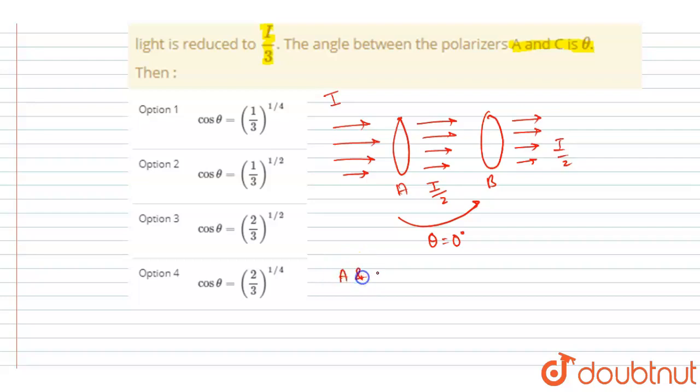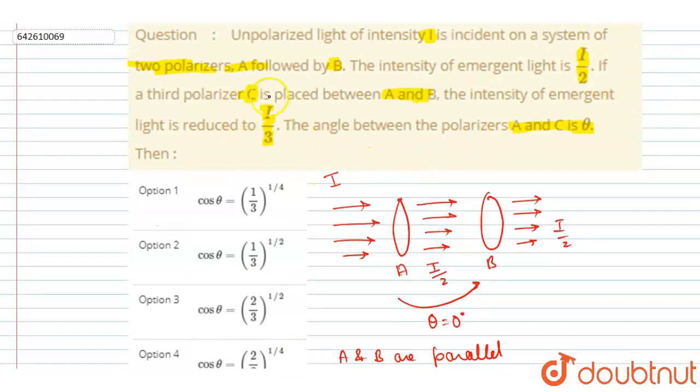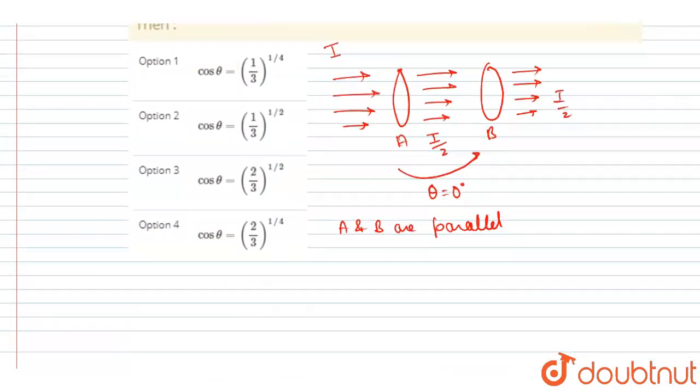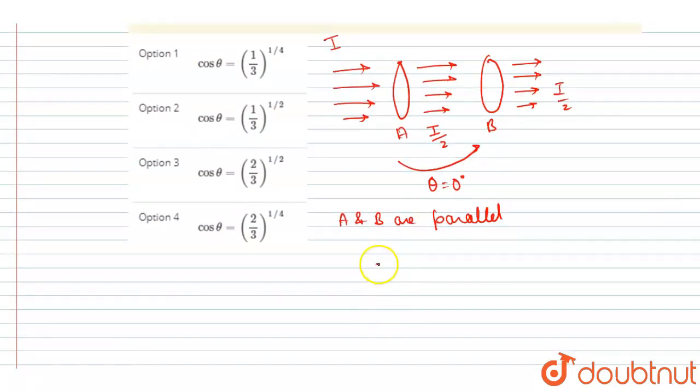So we got this. Now it is said in the question a third polarizer C is placed between A and B and the intensity is reduced to I by 3. So let's put the value of theta here. If I say this polarizer is making an angle of theta here with A,